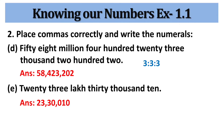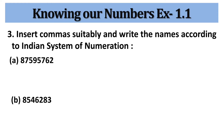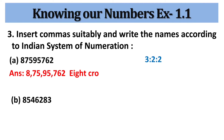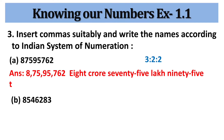The next problem is: insert commas suitably and write the names according to the Indian system of numeration. Again, you have to use the rule 3:2:2, put the commas, then we get the number 8 crore 75,95,762.